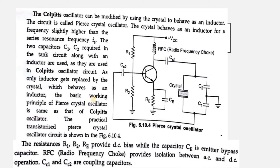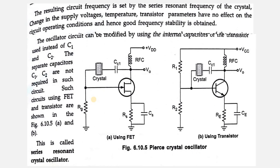The practical transistorized Pierce crystal oscillator is shown in the figure. Resistances R1, R2, and Re provide DC bias for the common emitter configuration of the transistor. The RFC (radio frequency choke) provides isolation between AC and DC operation, as discussed in the Colpitts oscillator. CC1 and CC2 act as coupling capacitors, and CE acts as an emitter bypass capacitor.